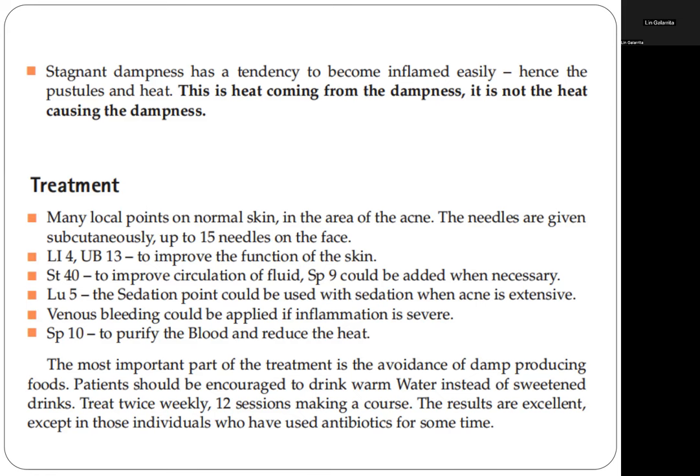Spleen 10 is used to purify the blood and reduce heat. The most important part of the treatment is avoidance of damp-producing foods. Patients should be encouraged to drink warm water instead of sweetened drinks. Treat twice weekly for 12 sessions per course. Results are excellent except in those individuals who have used antibiotics for some time.